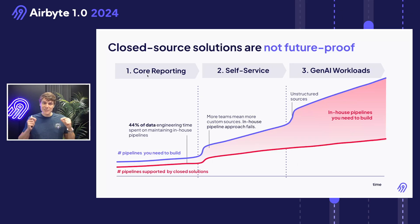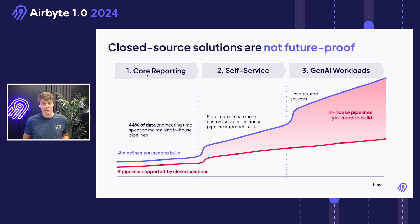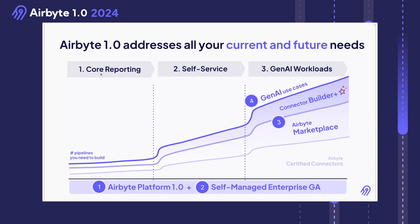In 2020, John and I talked to hundreds of companies, and every single one of these companies had to build a brittle in-house solution to work around the lack of extensibility of previous systems. And the reason for that is very simple: there is an explosion in the complexity of data.